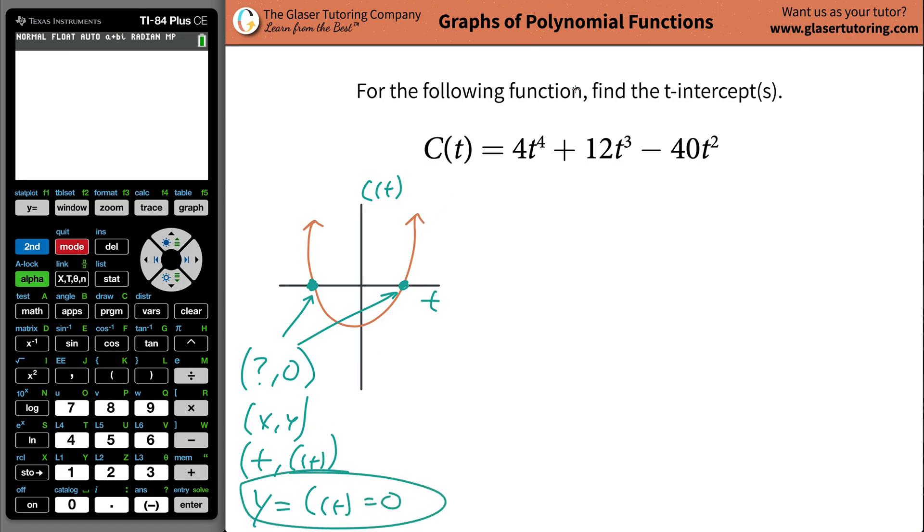When you think about x or t intercepts, what you want to think about is, I have my function, and somehow I have to find the t values that cause this thing to become zero. So, write that down. We're basically going to have zero here, that's going to be equal to 4t raised to the fourth, plus 12t cubed, minus 40t squared.